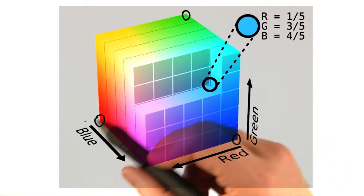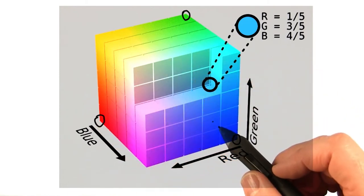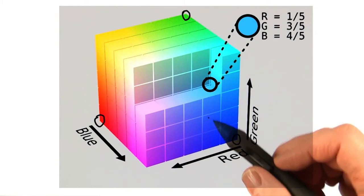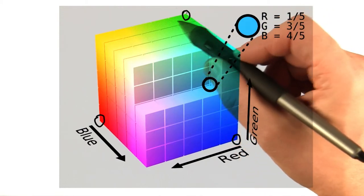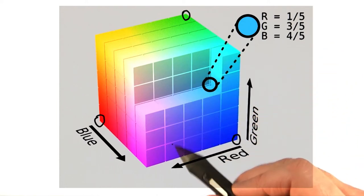Another way to visualize the RGB color space is to take a slice through the cube at these three corners. Each corner represents a single color channel at full intensity, with the other two channels off. For example, this vertex is where green is set to 1 and red and blue are 0.